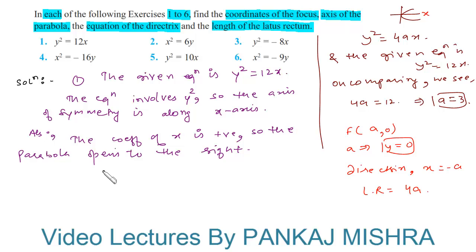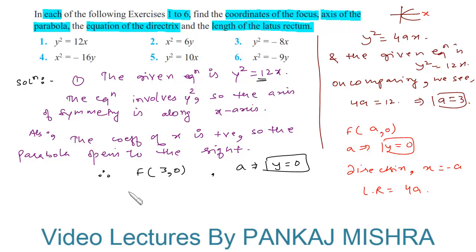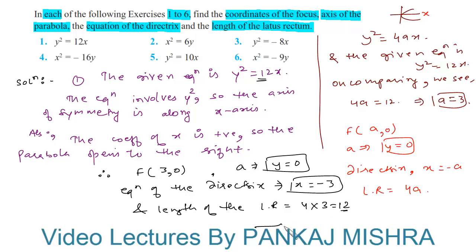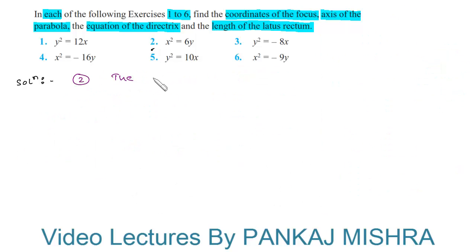Therefore, for this parabola: the focus is at (3, 0), the axis of the parabola is y = 0 (along the x-axis), the equation of the directrix is x = −3, and the length of the latus rectum is 4 × 3 = 12. This completes our solution. Let us see the second problem.